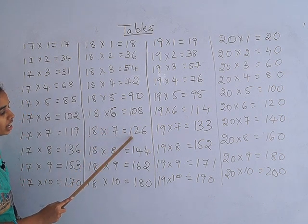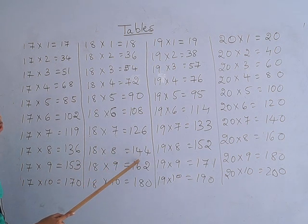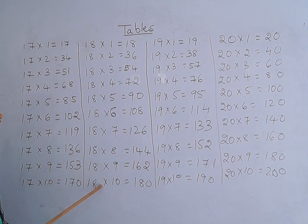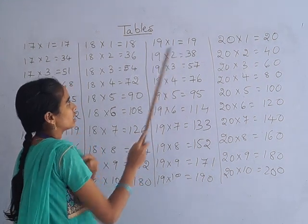18 sevens are 126, 18 eights are 144, 18 nines are 162, 18 tens are 118.